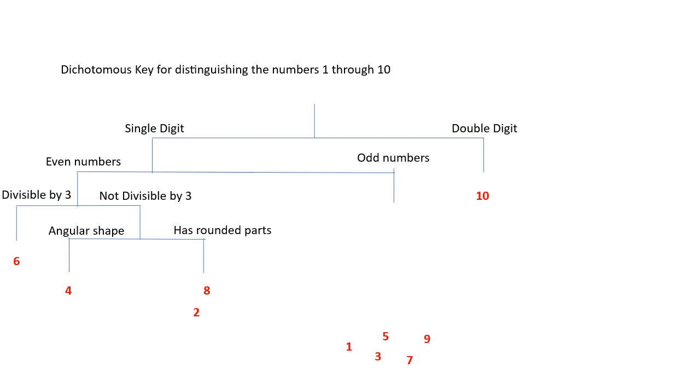So I decided to go with shape now. The angular shape or rounded parts. So the angular shape identifies the 4, and then the rounded parts leave you with the 8 and the 2.